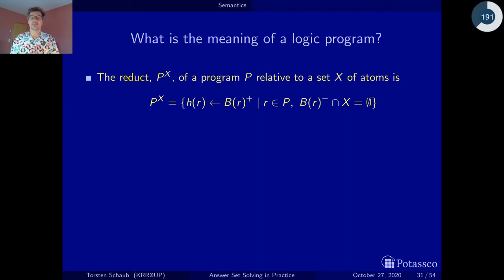Given a set of atoms X and a normal logic program P, the reduct is simply defined by the positive rules that more or less survive the evaluation of the negative body literals with respect to the set X. So as we did before, we look at all rules, evaluate the negative body literals, and only if they are disjoined from X, we keep the rule, but only the rule with the positive body literals. And this, what we get then, is a positive logic program.